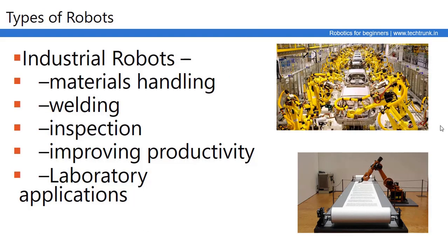Industrial Robots are Stationary Robots used for a variety of tasks. The same robots can be pre-programmed to perform tasks like Material Handling, placing objects, capping, fitting, analyzing objects, welding, quality inspection, quality checking, and improving productivity. They enable high-speed mass production. Robots are also used for laboratory applications like analyzing, quality testing, and checking purposes.